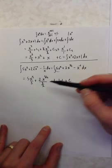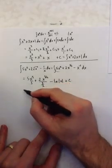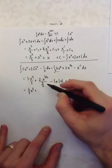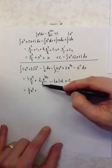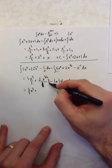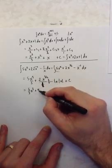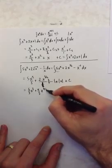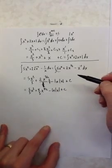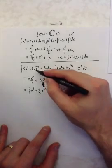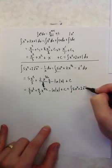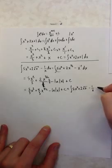I can simplify this a little bit by taking care of the divided fraction. That gives 5 thirds x cubed, plus — remember when I have a fraction on the bottom, I invert and multiply — so multiplying by 2 thirds gives 4 thirds x to the 3 halves, and then minus the natural log of the absolute value of x, plus my constant. Just to recap, this was the antiderivative of 5x squared plus 2 times the square root of x, minus 1 over x.